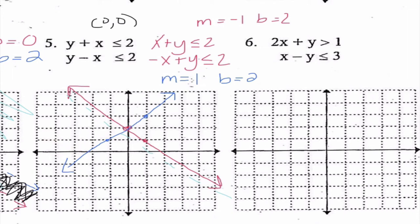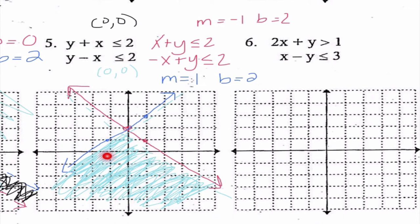I get 0 is less than 2, which is a true statement. So I draw a dashed indicator line on that side. I can clearly see that the dashed lines form a V shape where they overlap, so I shade everything in that region. To double-check, I'd substitute an ordered pair like (0, 0) into both inequalities to confirm it works. If you prefer the full-shading method from problem 4, that's great — but I'll use this indicator method going forward.